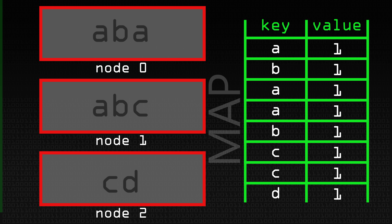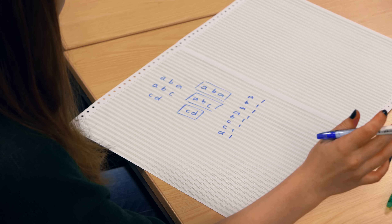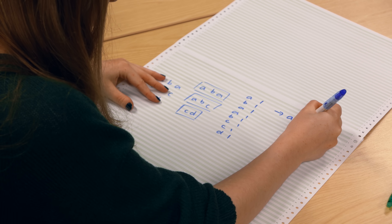At the end of the Map stage we have all the keys and values. What happens then is a shuffle phase, which the programmer doesn't need to know about — it just happens in between. That basically groups data items onto nodes based on the key, so that all data items with the same key are stored on the same node.